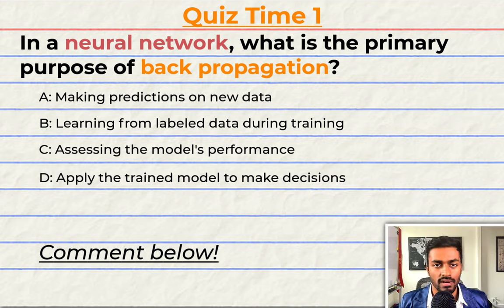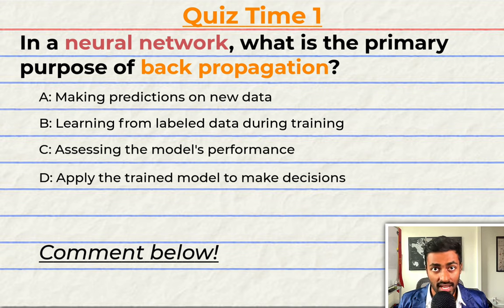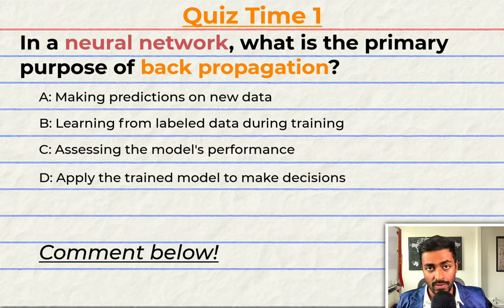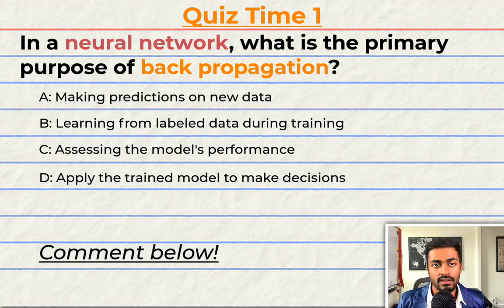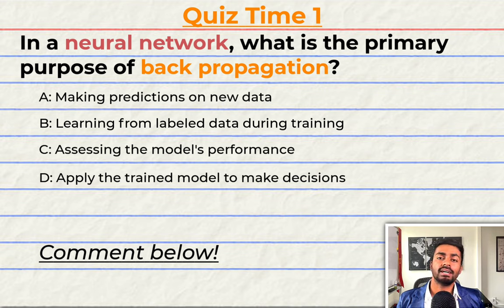Have you been paying attention? Let's quiz you to find out. In a neural network, what is the primary purpose of backpropagation? A: Making predictions on new data. B: Learning from labeled data during training. C: Assessing the model's performance. D: Applying the trained model to make decisions. Comment your answer down below and let's have a discussion.